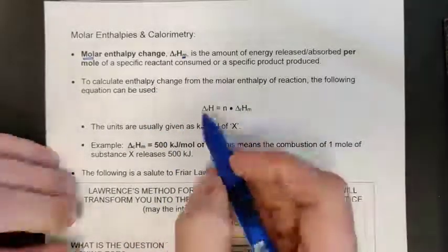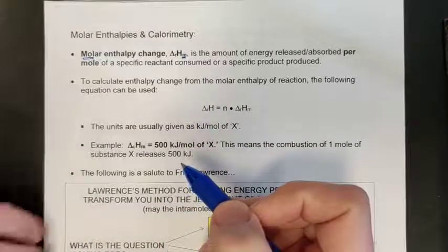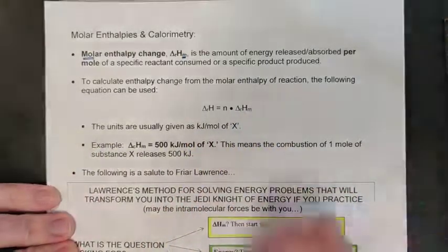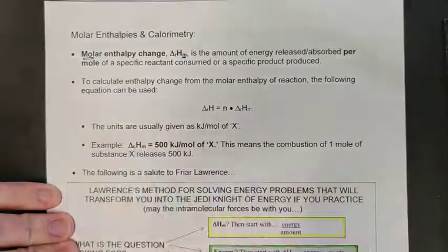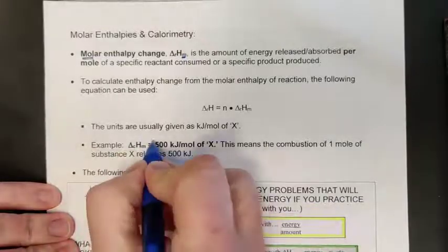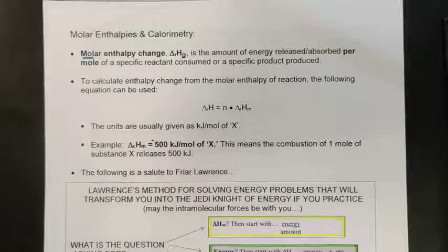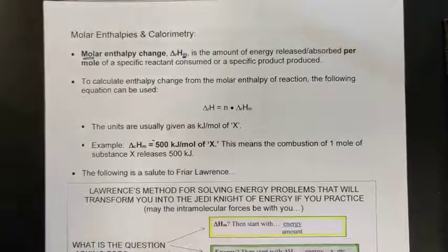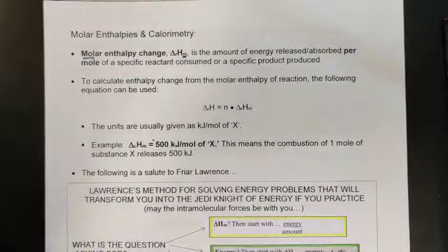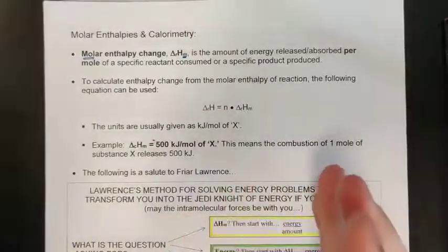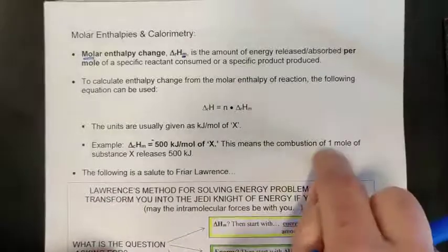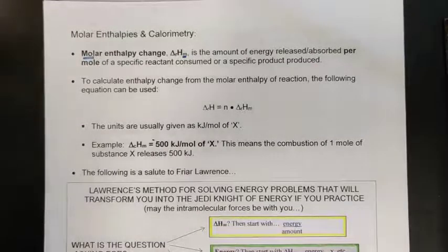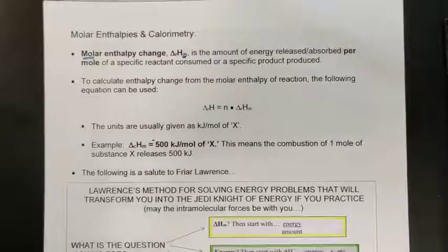The units for molar enthalpy change are a little different from enthalpy change. Enthalpy change was just a kilojoule amount; if we're talking about energy per mole, we need kilojoules per mole. For example, random substance X has a molar enthalpy of negative 500 kilojoules per mole — so for every one mole combusted, 500 kJ is released. If I have two moles, I get double the energy released.